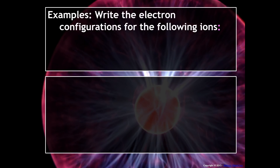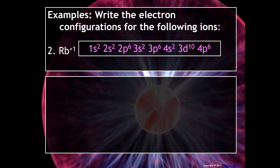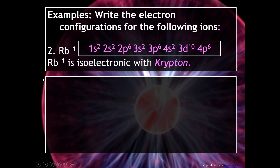Let's write the electron configuration for rubidium with a +1 charge. It would be 1s2, 2s2, 2p6, 3s2, 3p6, 4s2, 3d10, and 4p6. The plus one indicates that rubidium lost an electron, so you go back and see which noble gas that corresponds to. We would say that rubidium is isoelectronic with krypton because it has the same number of electrons as krypton.